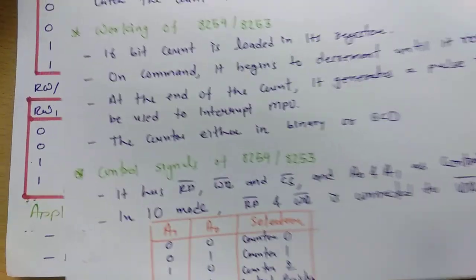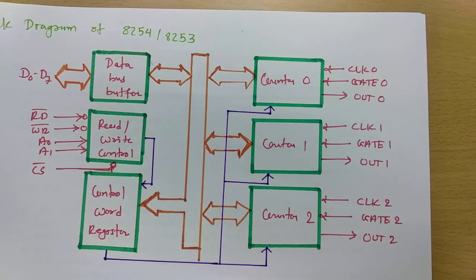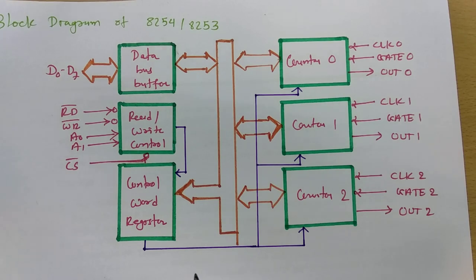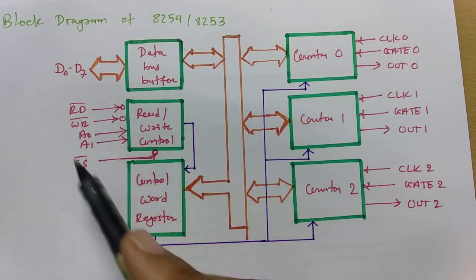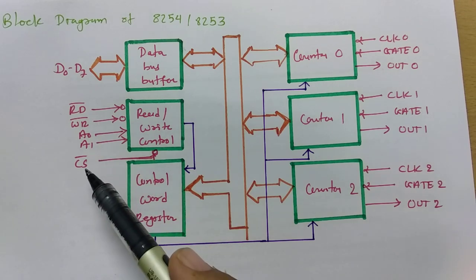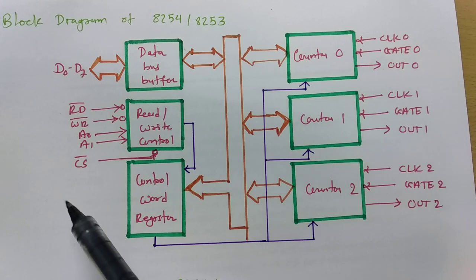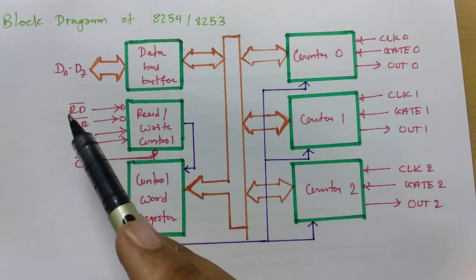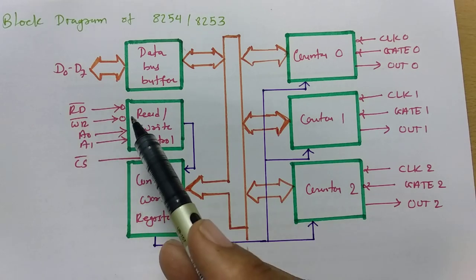Now let us look at the block diagram of 8254. As mentioned, there are 5 control signals: Read bar, Write bar, A0, A1, and Chip Select. Chip Select selects the 8254 chip. Read bar is the signal given by the microprocessor to read status, and Write bar is to write status.